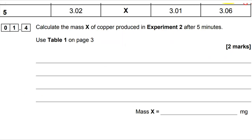I'm now transferring the relevant data across. We want to know the mass X of copper produced in experiment two. So I've got my experiment one and experiment three, 3.02 and 3.01. My average of all three of them is 3.06.